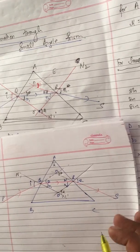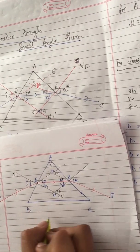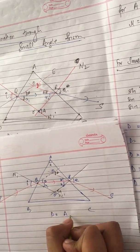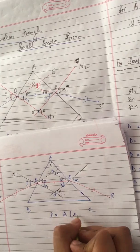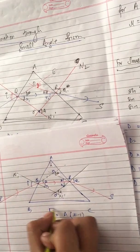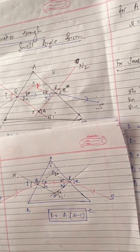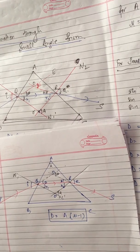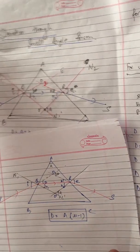Our main goal is to prove the deviation D equals A times (mu minus 1). This is the relationship between the deviation, the angle of prism, and the refractive index. Let me now prove this.